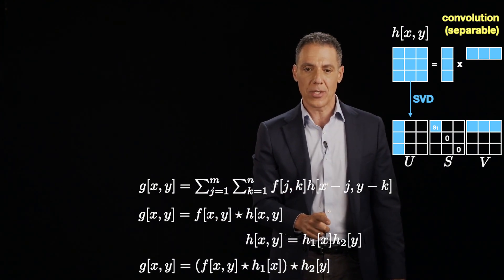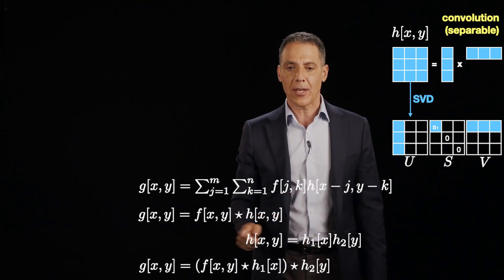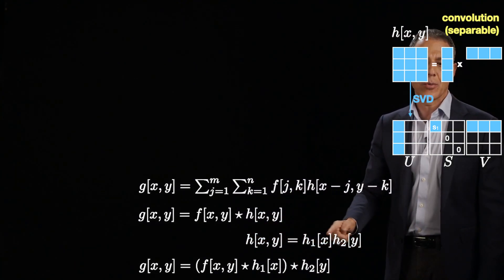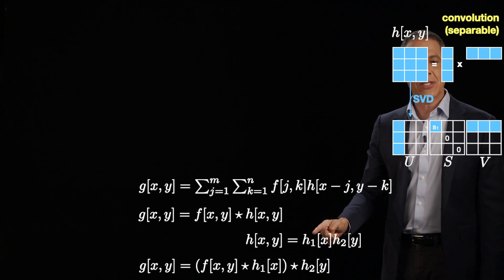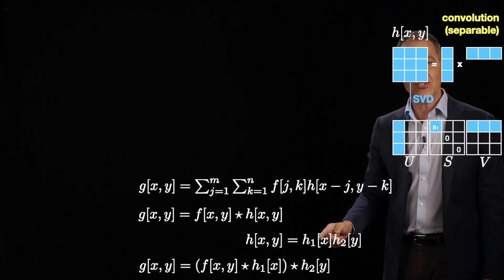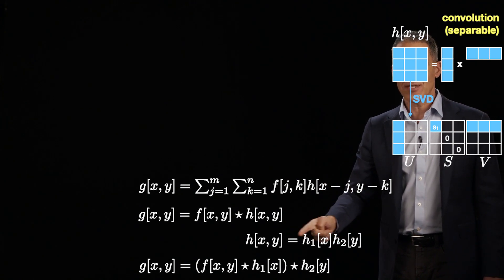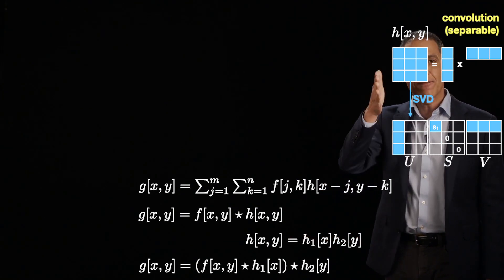But I've just told you that according to SVD, I can write that 2D filter response as the product of two 1D filters, H1 and H2. And that's really nice because now I'm going to convolve with this in the horizontal direction and this, the other one, H2 of Y in the vertical direction.